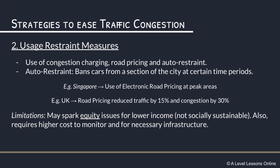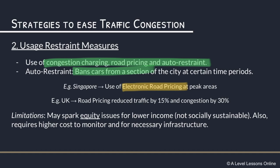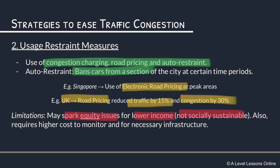The next strategy is usage restraint measures — forcefully limiting the number of cars on the road. This includes congestion charging, road pricing, and auto restraint, which bans cars with certain license plates from certain parts of the city during peak hours. In Singapore, we have the ERP. In the UK, road pricing has reduced traffic by 15% and congestion by 30%. A limitation is equity issues — increased road charges burden lower-income groups, making this not entirely socially sustainable. There are also high costs involved in setting up the necessary infrastructure.